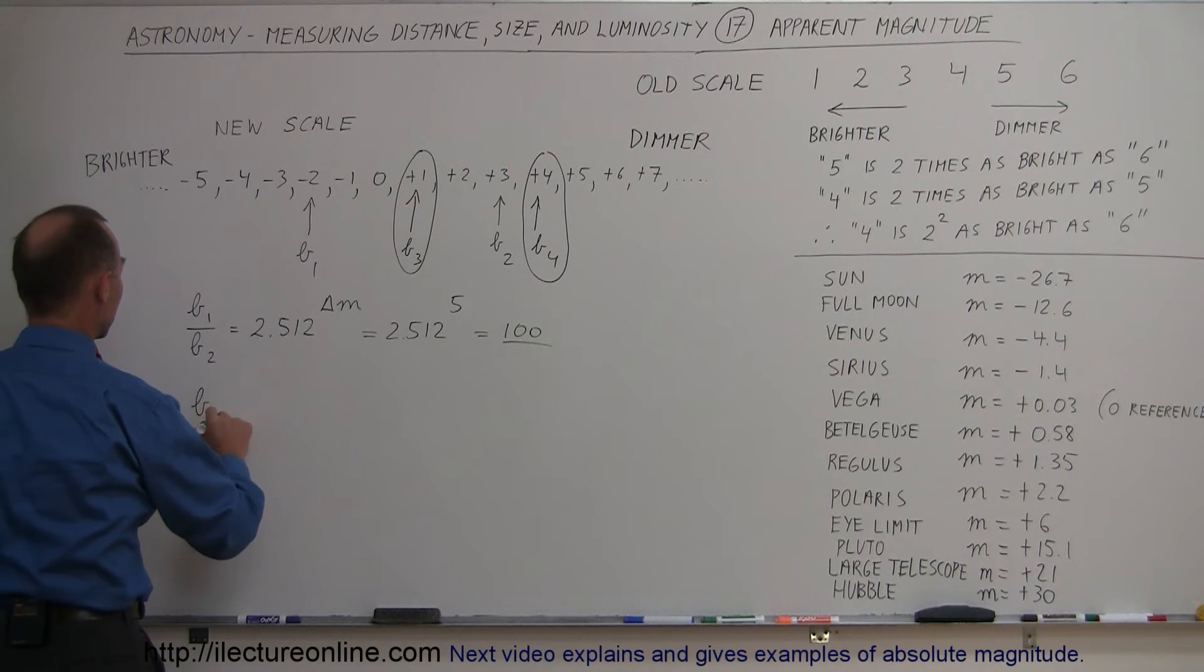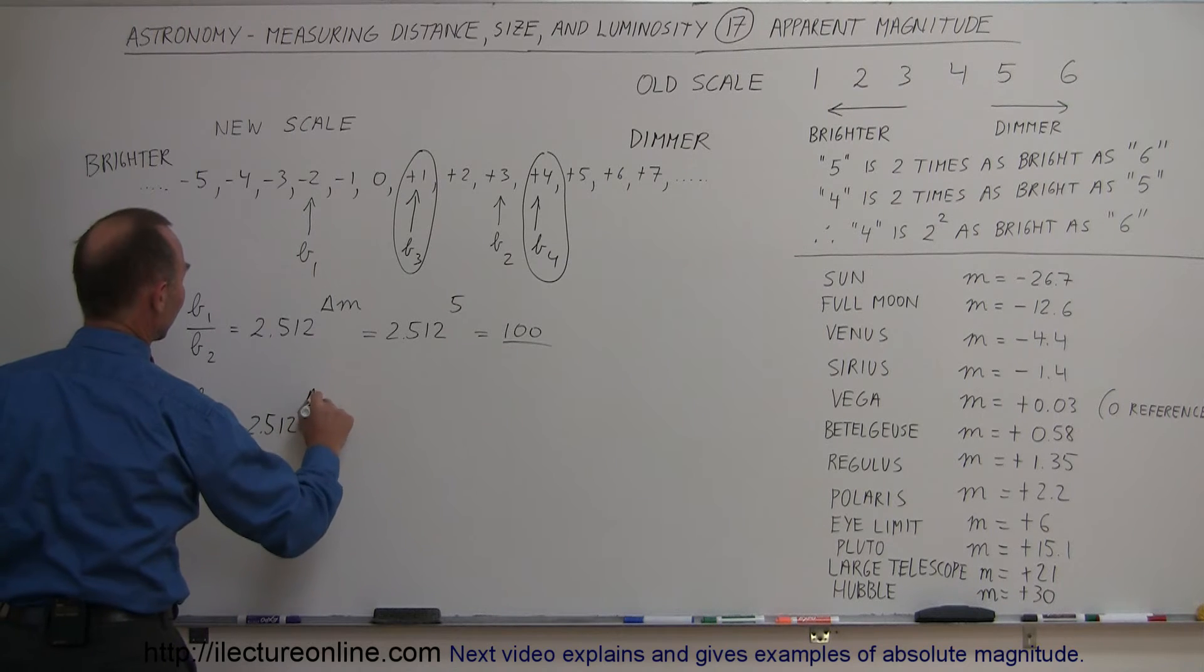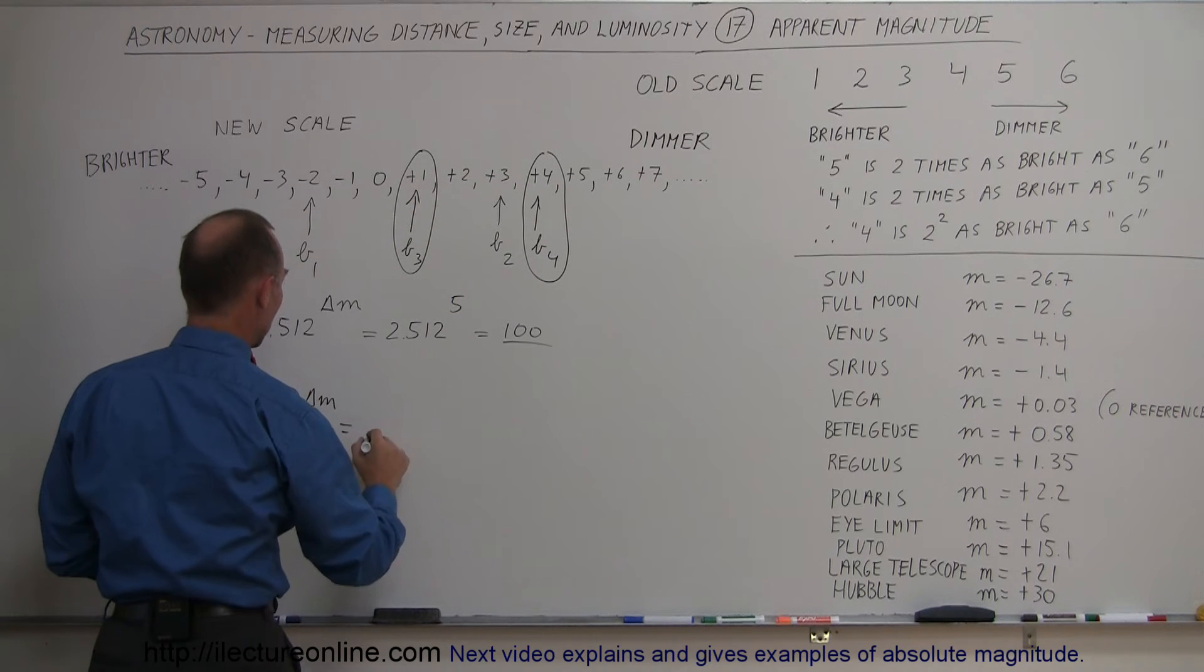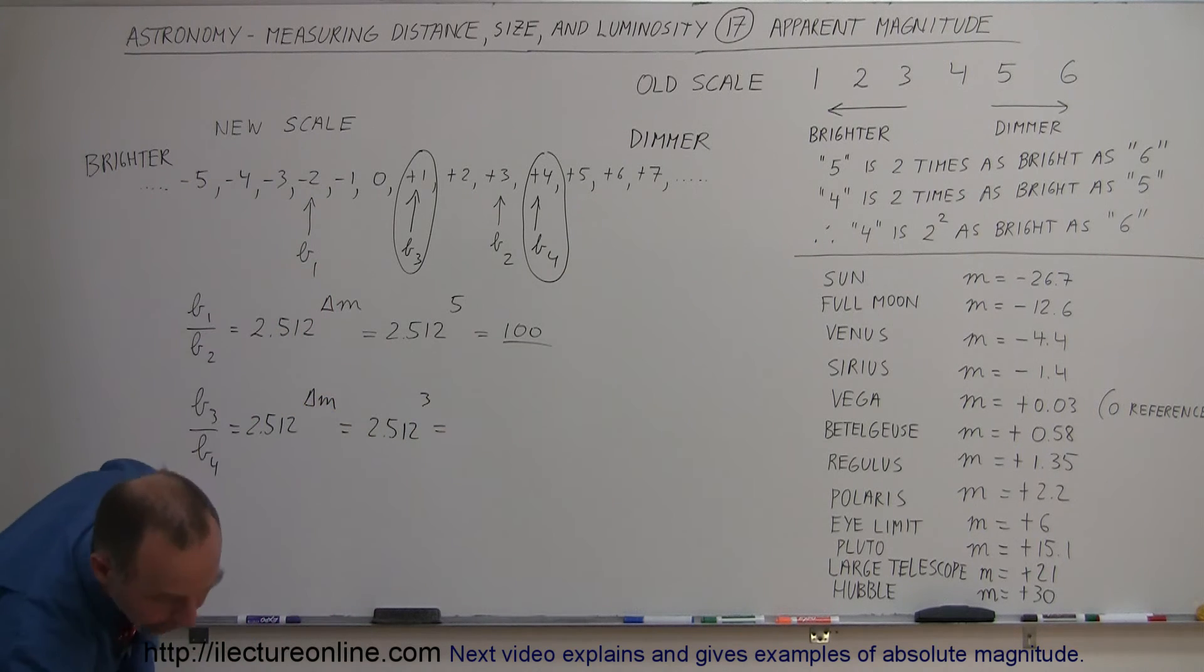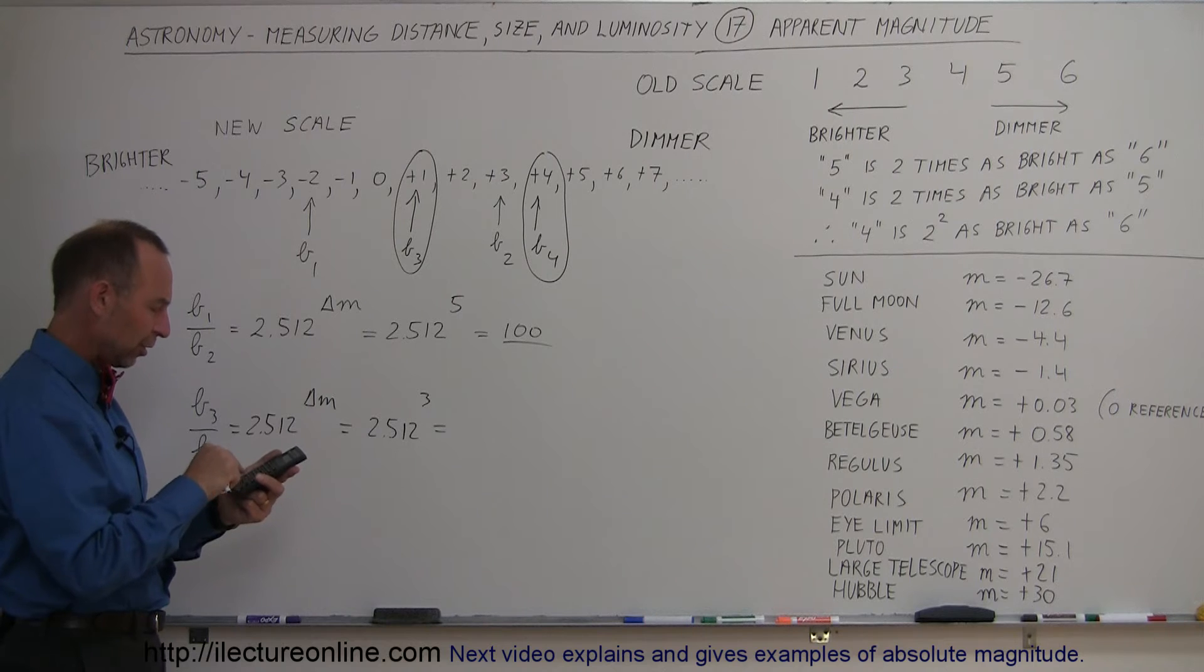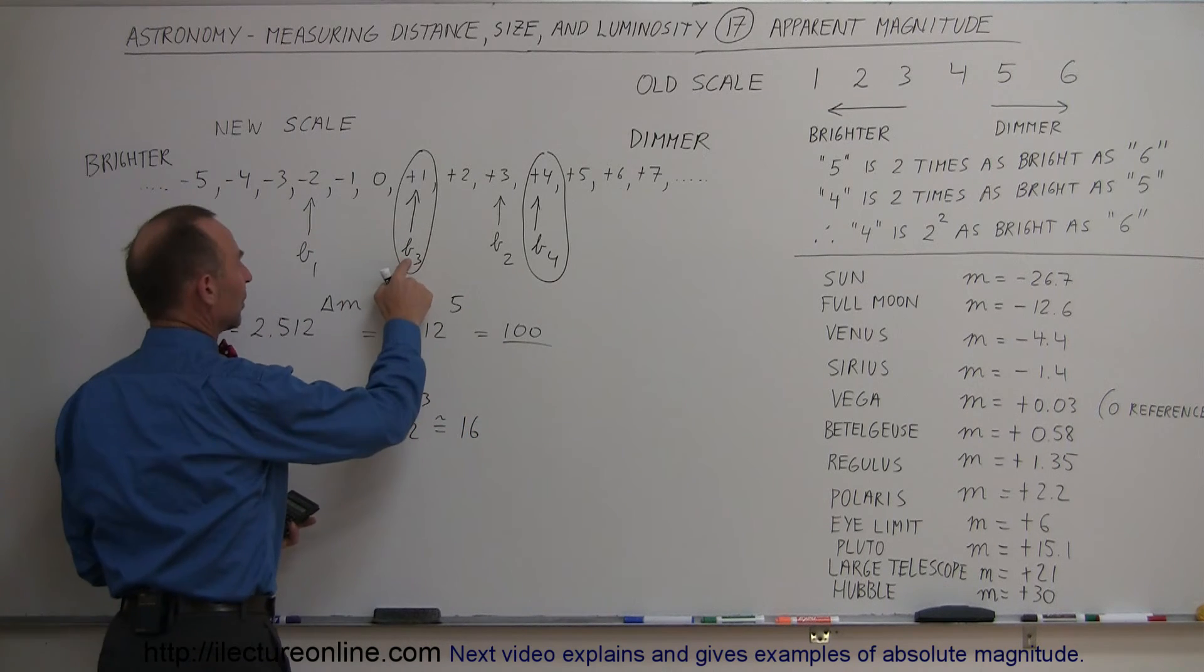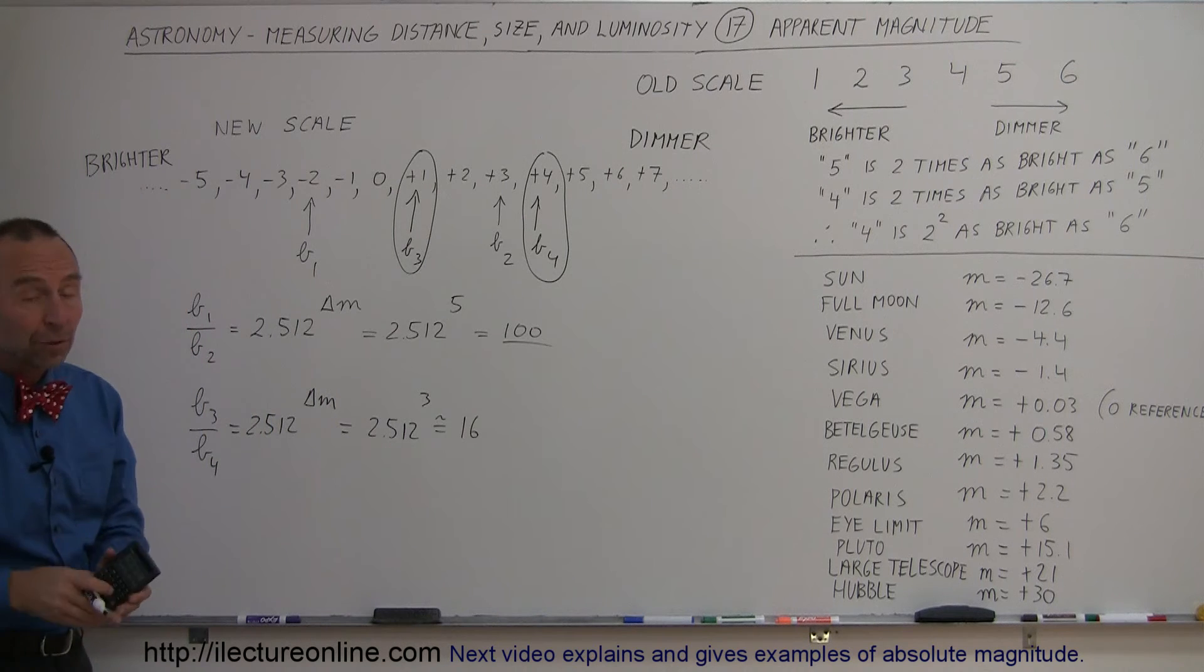The ratio b3 divided by b4 is equal to 2.512 raised to the difference in the magnitude. In this case, the difference between these two magnitudes is four minus one, which is three. So we have 2.512 to the third power. Then, of course, you need your calculator. 2.512 raised to the third power is 15.9, or about 16. That means star three is 16 times as bright as star four. And that's how we use the magnitude scales.